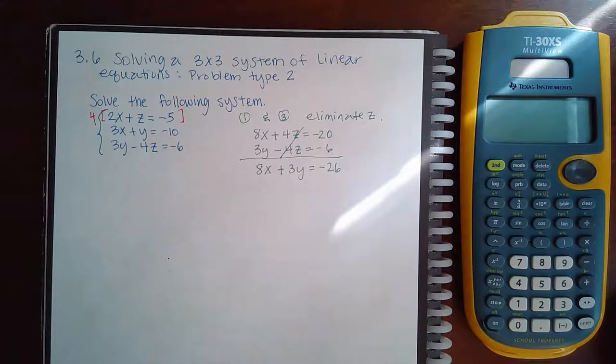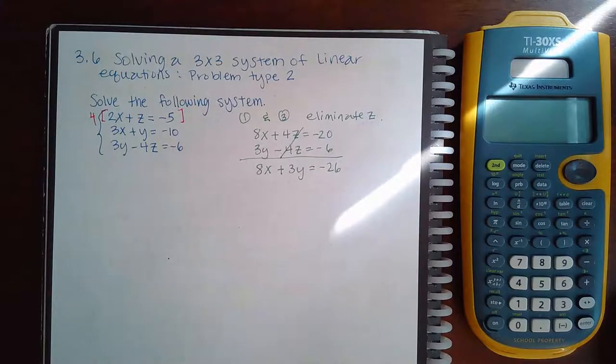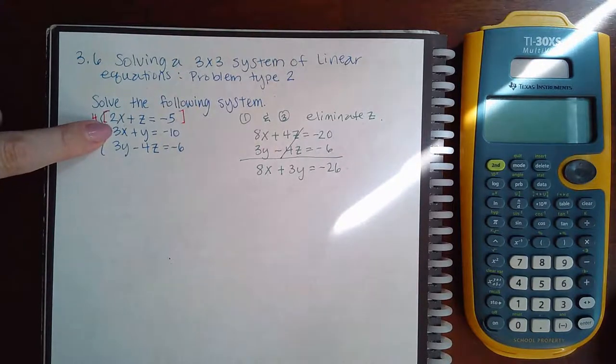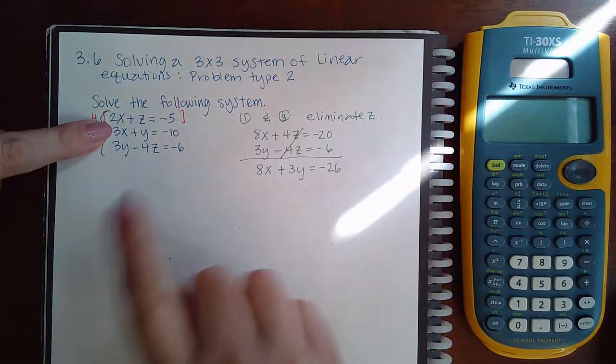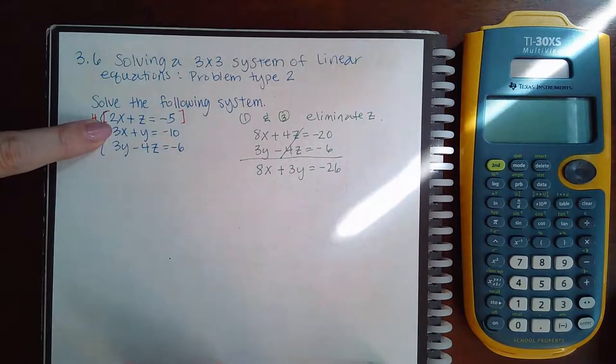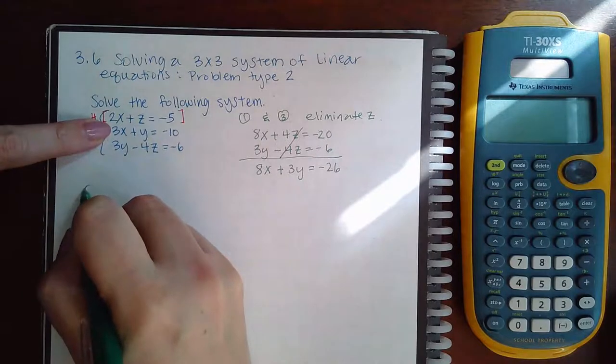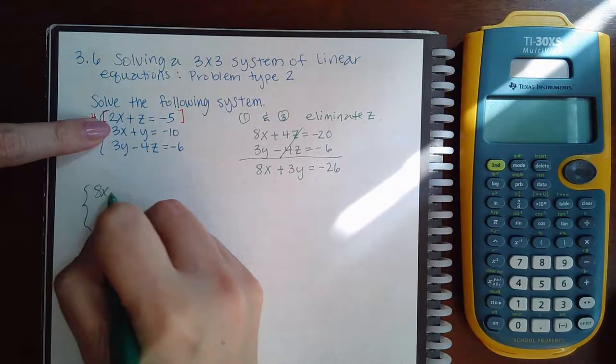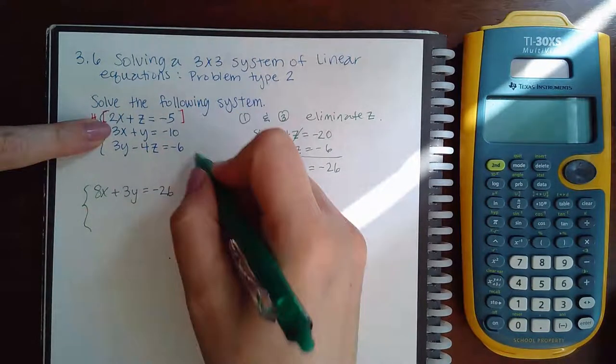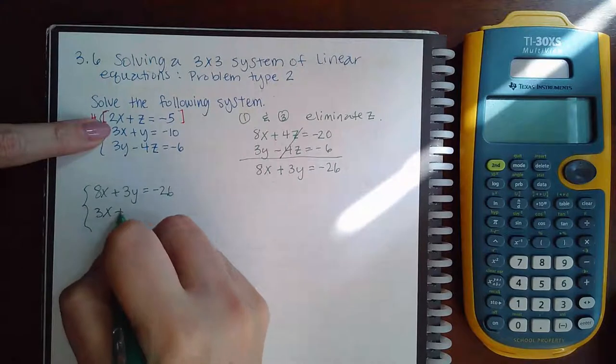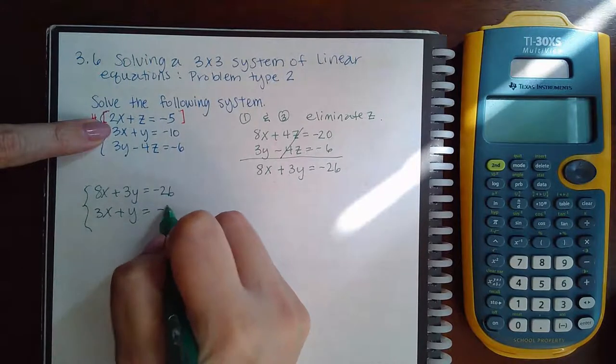Now the cool thing about this is I really don't have to do the second step which is to take equation 2 and one of these guys to eliminate the same variable. Why don't I need to do that step? Because this equation already has that same variable eliminated. So that means I skip that step. This is my system. The equation that I found by eliminating z in the top and the bottom equations and then the second equation itself is already good to go.